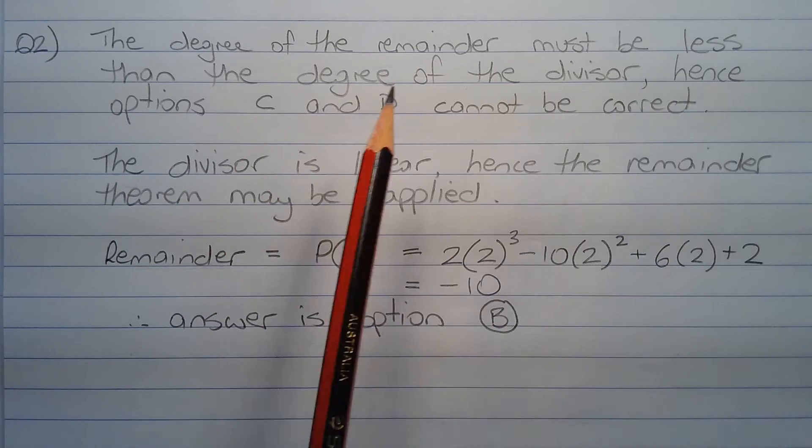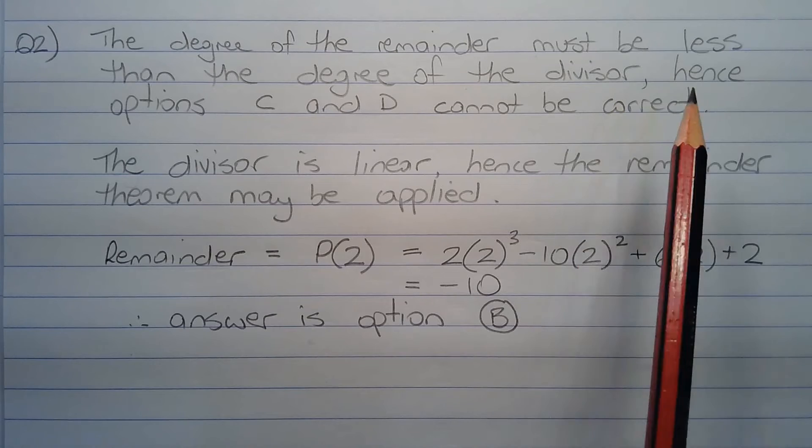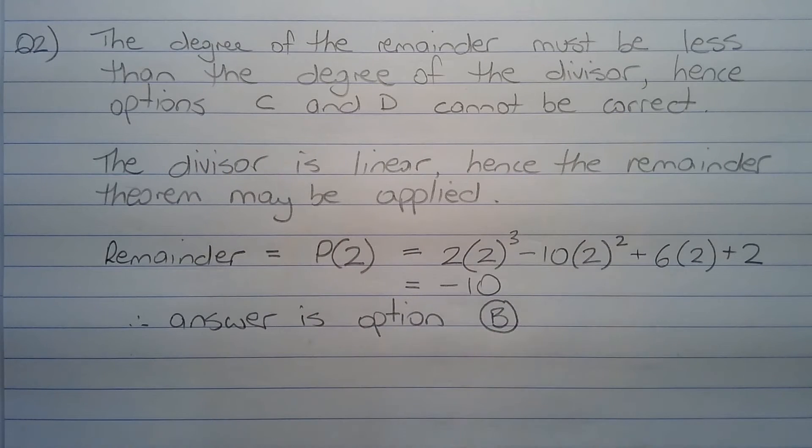The degree of the remainder must be less than the degree of the divisor, hence options C and D cannot be correct.